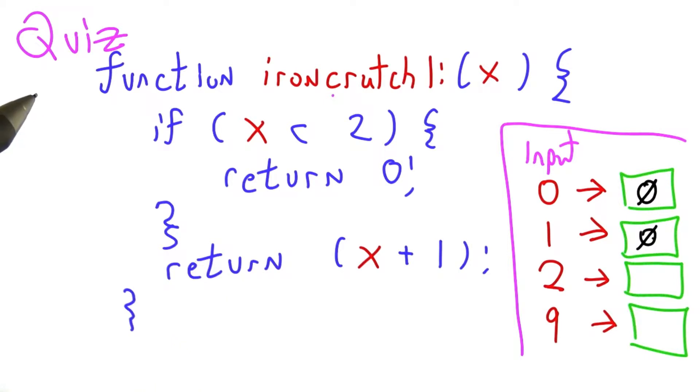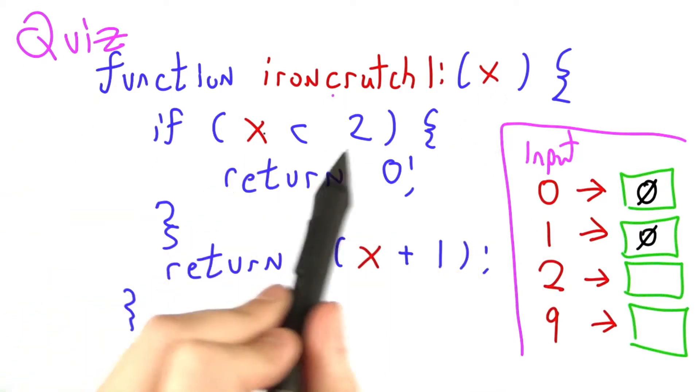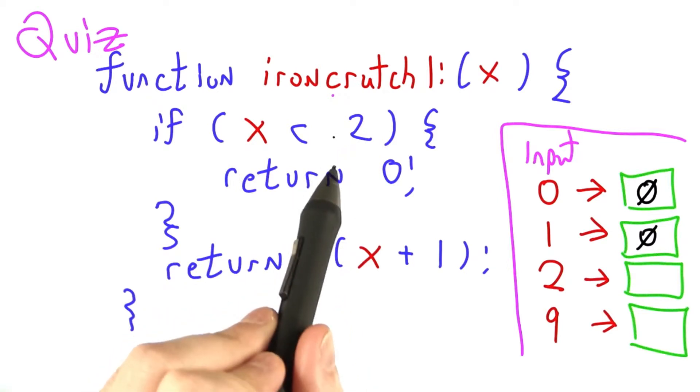This function, not so exciting thus far. But now we pass in 2 for x, and 2 is not less than 2. It is equal to 2, however.